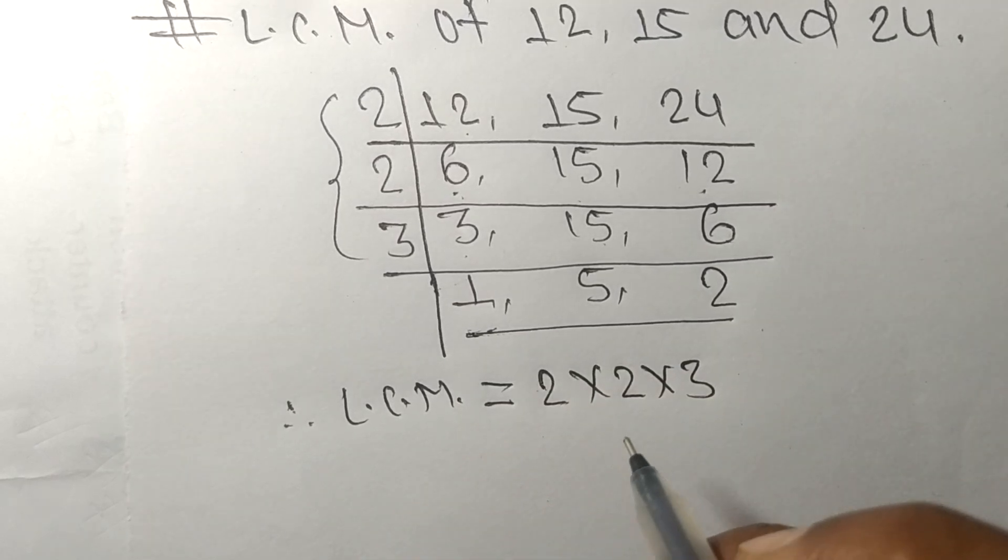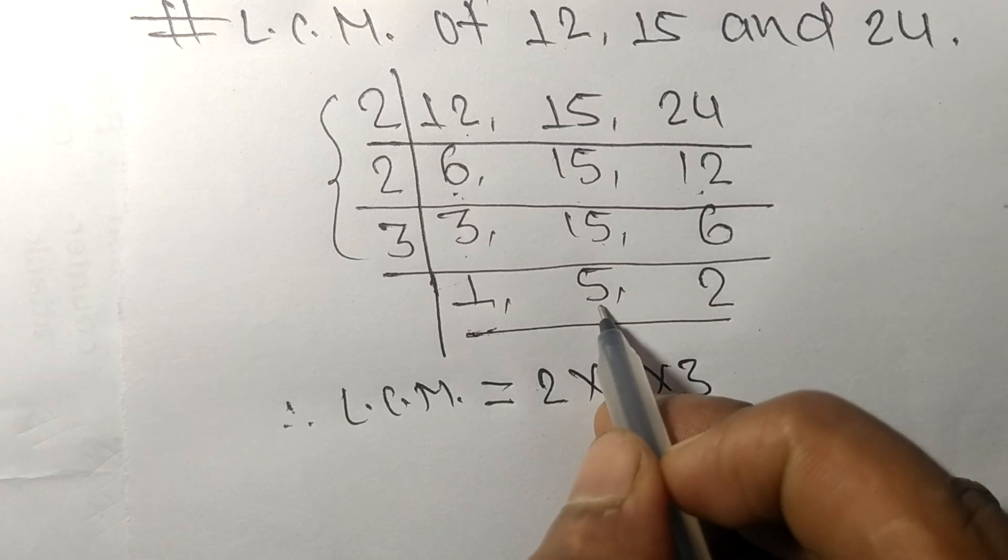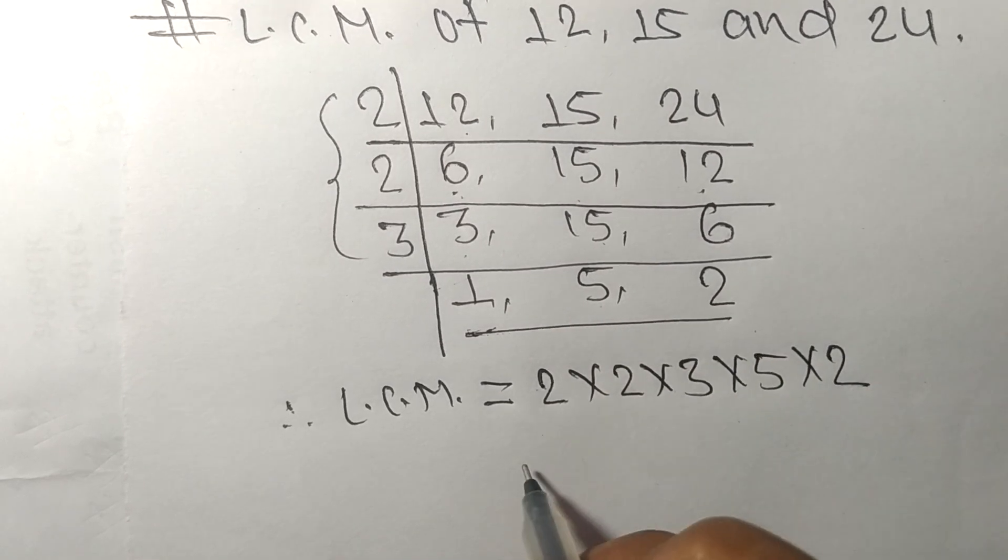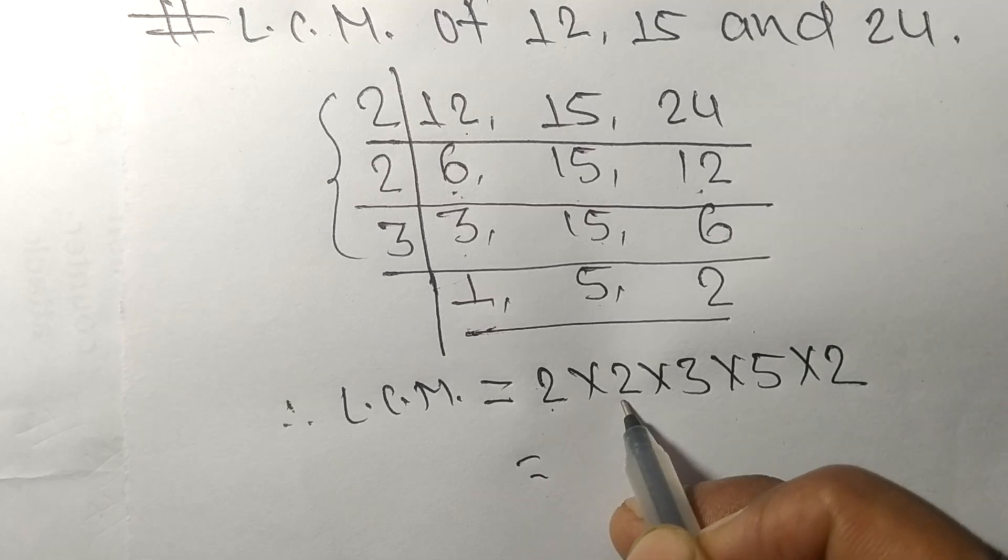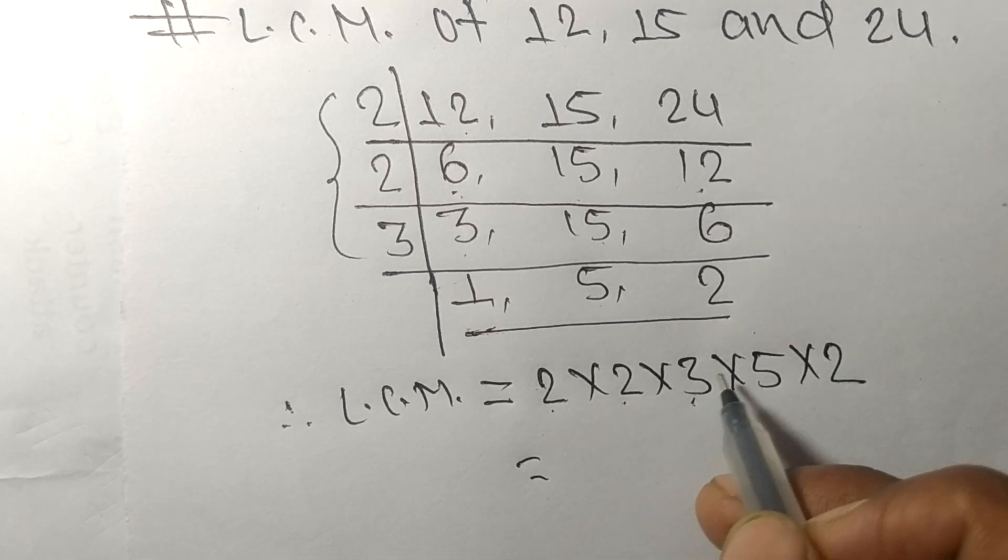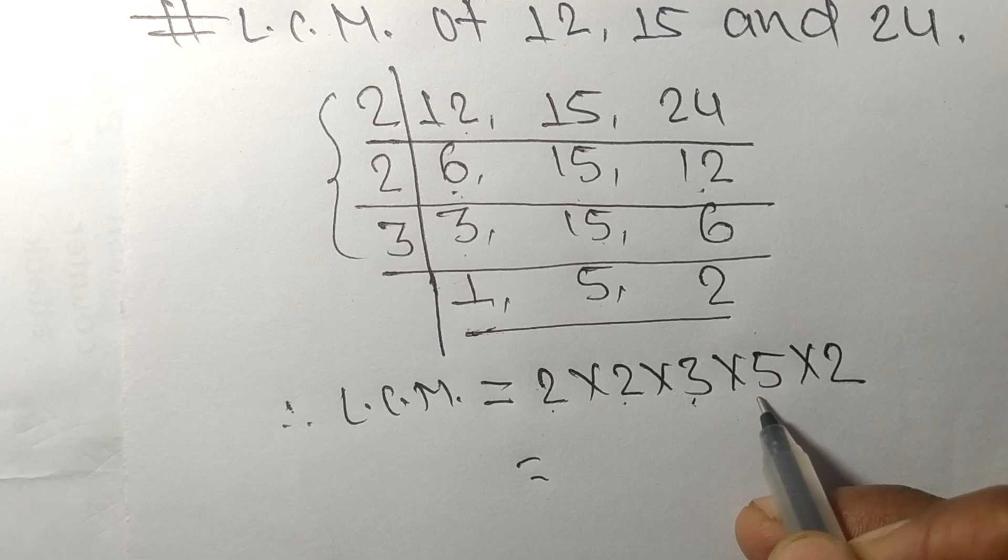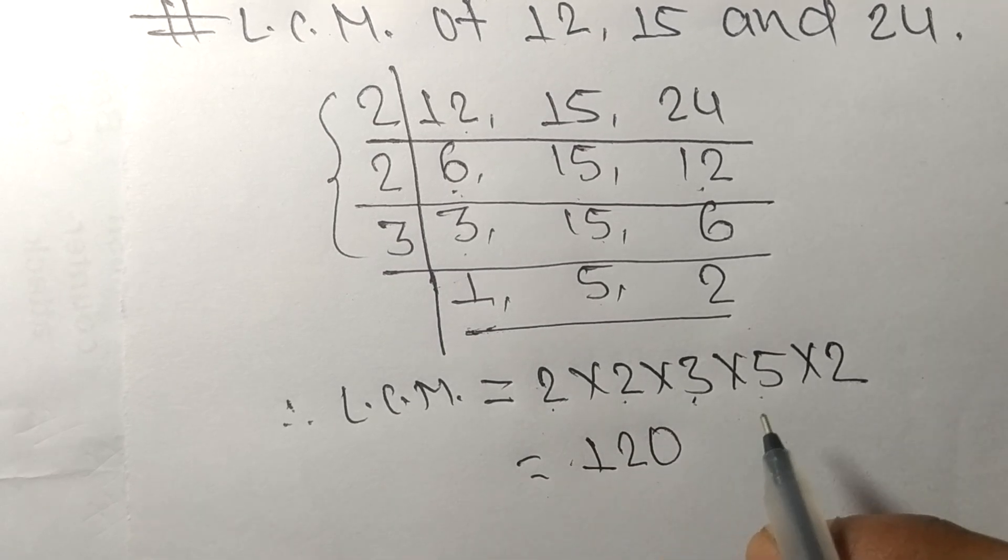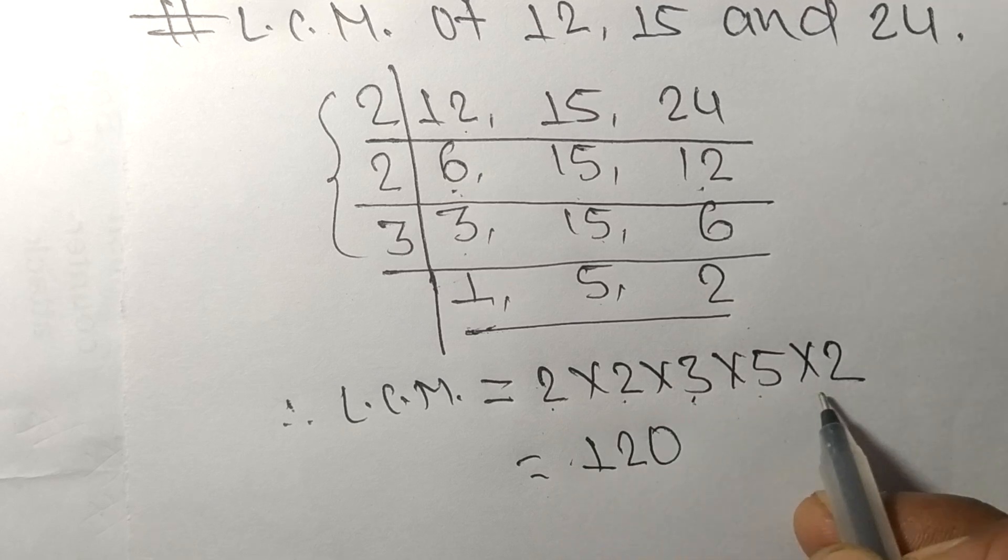So 5 and 2. 2 times 2 equals 4, 4 times 3 equals 12, 12 times 5 equals 60, and 60 times 2 equals 120. So by multiplying all these numbers, we got 120.